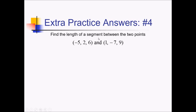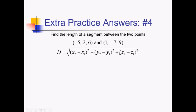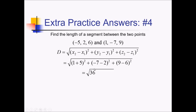On this problem, we want the length of a segment between these two three-dimensional points, so we'll use the 3D distance formula: square root of (x2 minus x1) squared plus (y2 minus y1) squared plus (z2 minus z1) squared. Plugging these two points in, that's the square root of (1 minus negative 5) squared, so plus 5 squared; (negative 7 minus 2) squared; and (9 minus 6) squared. So 6 squared is 36; this is negative 9 squared, so 81; and 3 squared gives us 9. Adding all of this together: 81 plus 9 is 90, plus 36 is 126. The digits add up to 9, so it's divisible by 9 — 126 equals 9 times 14. So 3 radical 14 would be our final simplified answer.